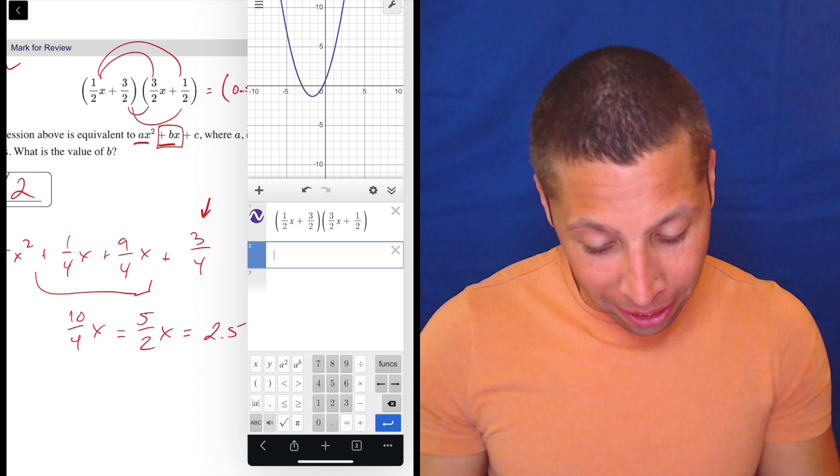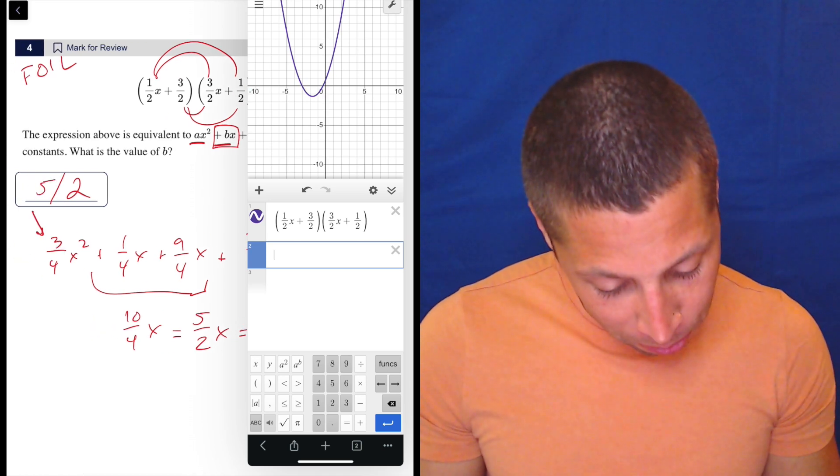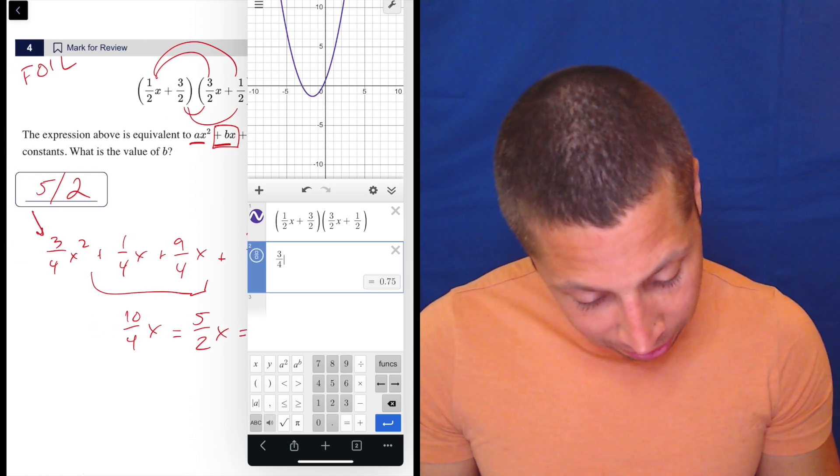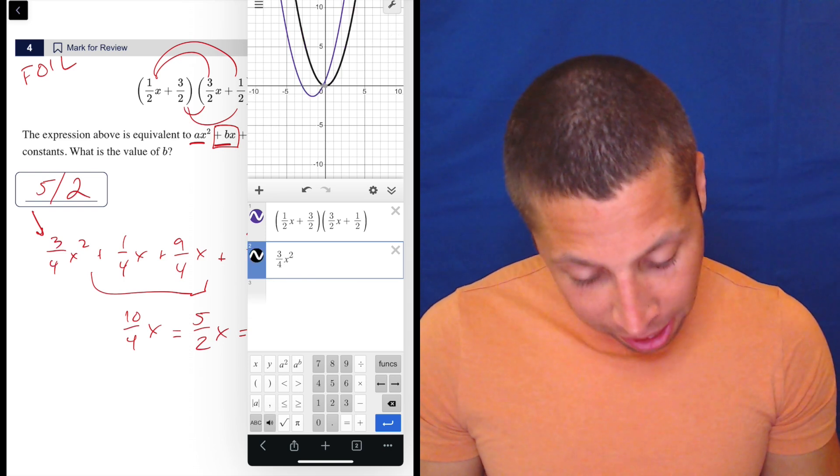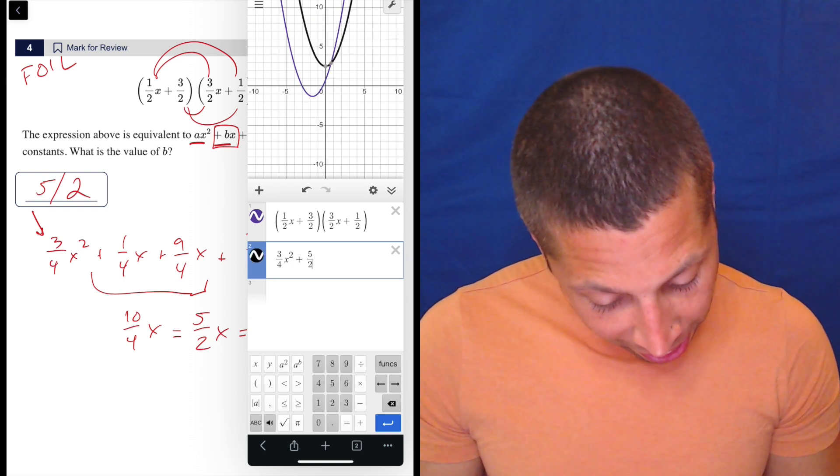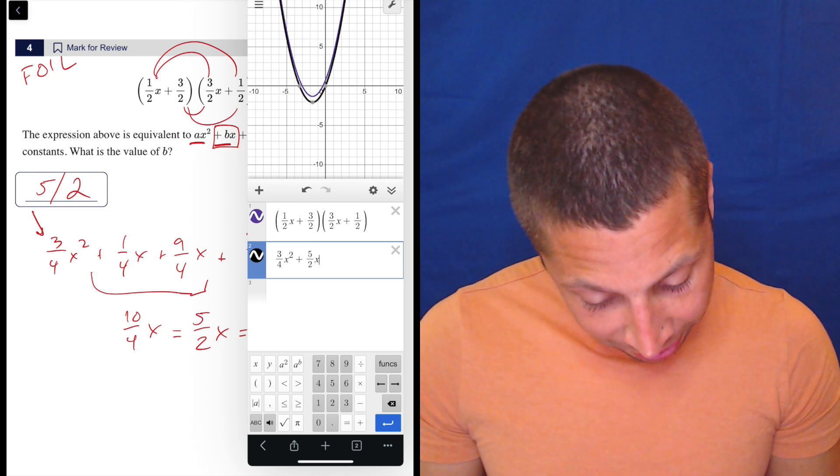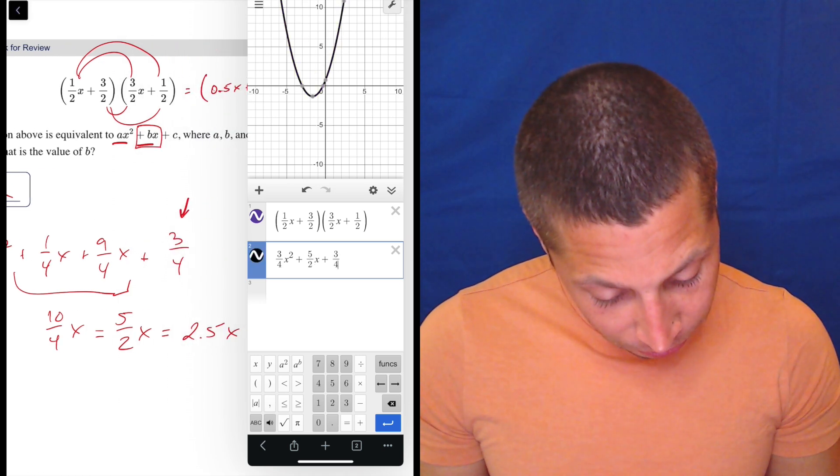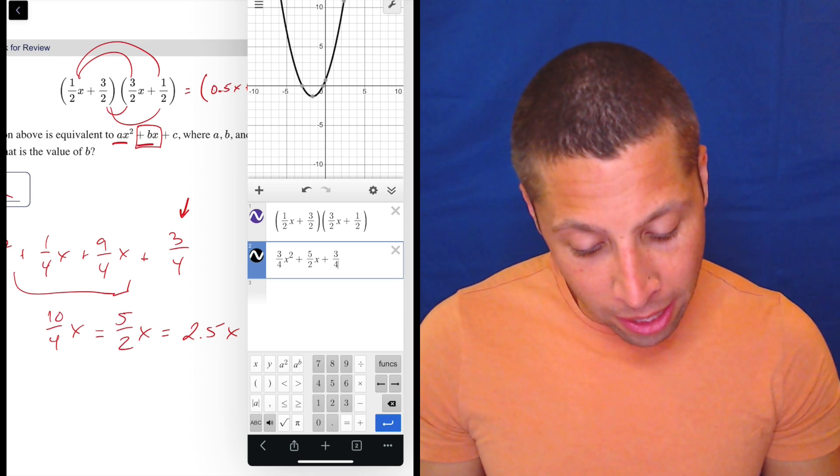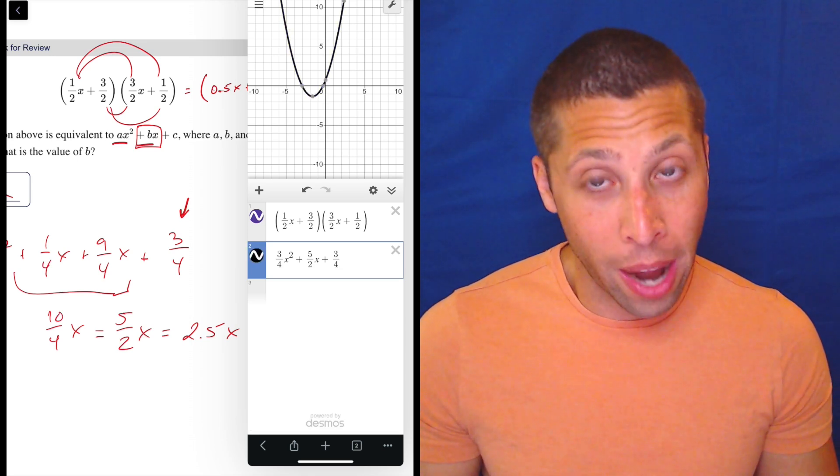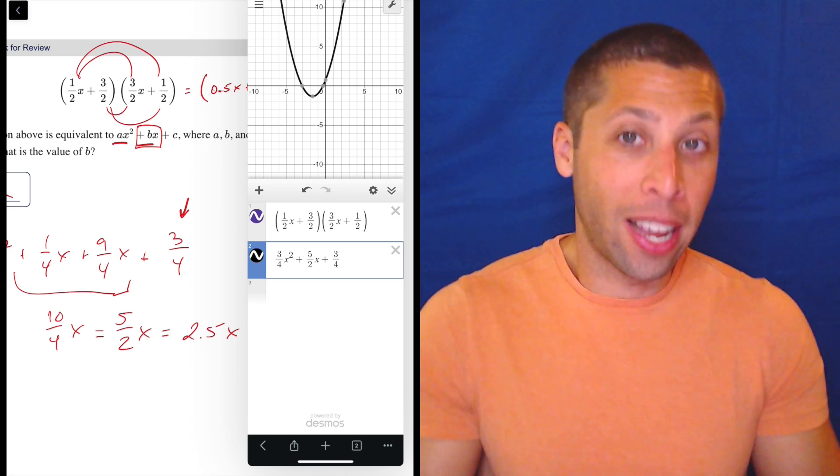Did I foil it right? That would be 3/4 X squared plus 5/2 X plus 3/4. Did I get the same parabola twice? Yeah. Just tap it on and off and you can see they overlap. So I know my algebra is correct because I got the same thing twice.